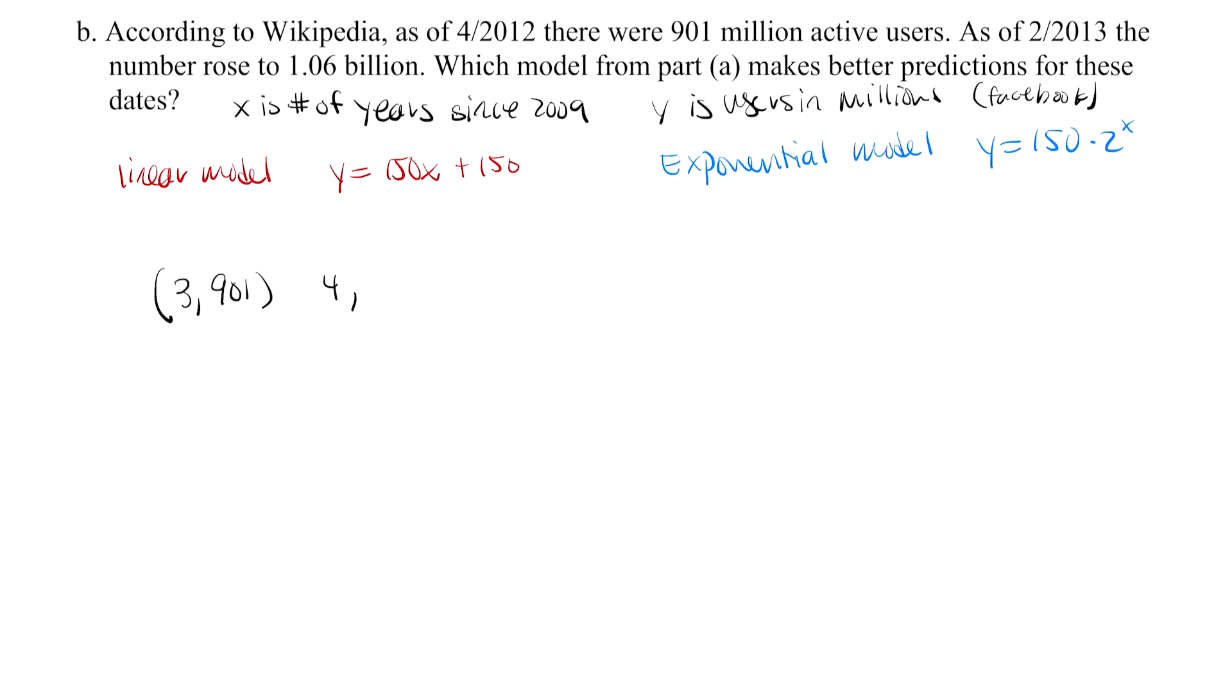Take a moment and see if you can write 1.06 billion in millions. 1.06 billion is written as 1,060,000,000. So we're going to divide that by 1 million, which is 1,000,000. Cross out all the zeros that match, and you'll notice you end up with 1,060.